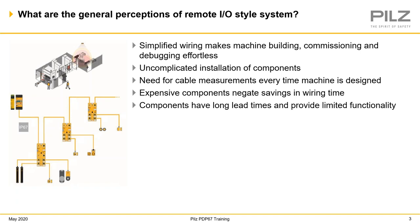We know there are a lot of different remote IO systems out there and people have a lot of preconceived notions about them. The real positives are that remote IO systems simplify your wiring and make commissioning easier. But we also hear that you've got to measure cables out every time, components can be expensive — cutting into the savings from reduced wiring time — and components tend to have longer lead times with not much additional functionality because they're specially designed. We want to make sure that with our PDP system, we haven't fallen into those same traps.